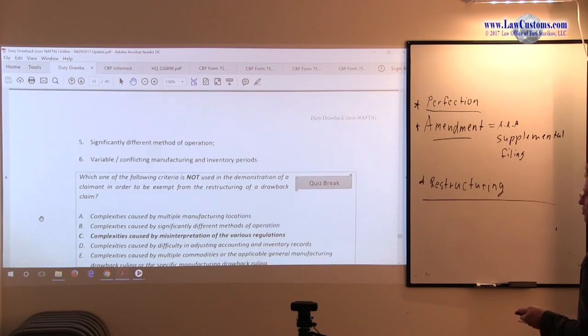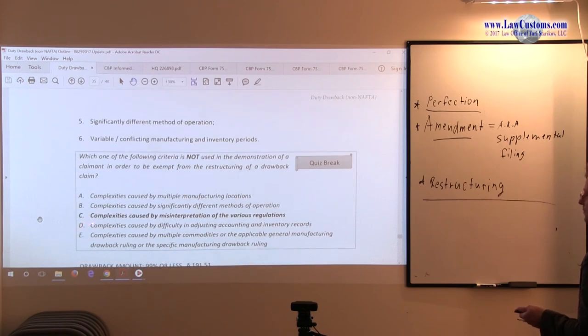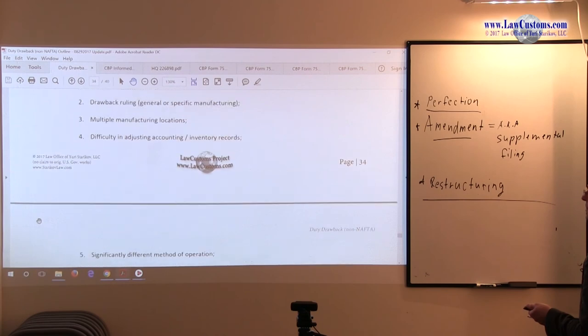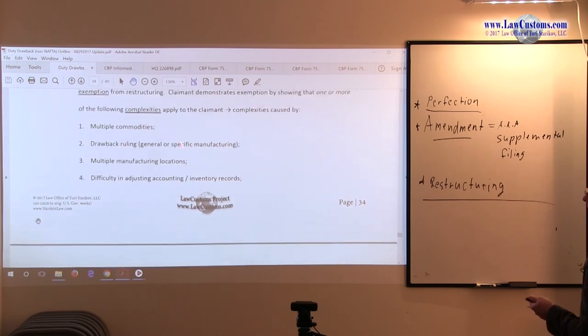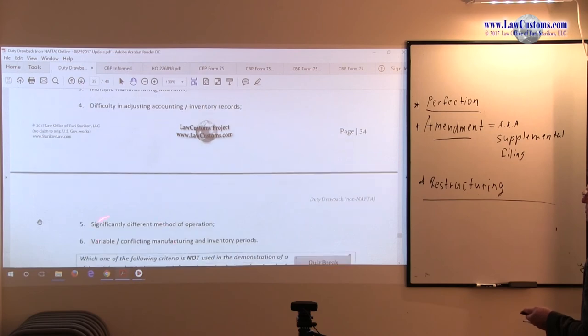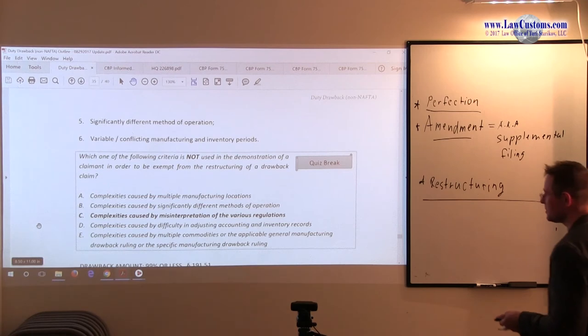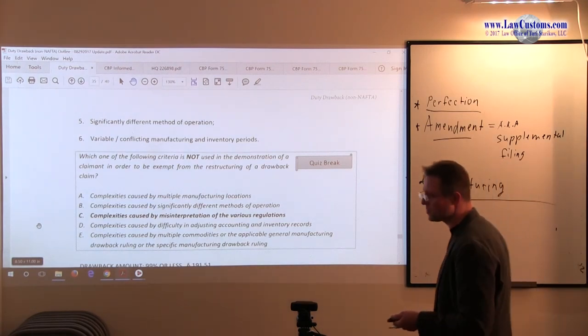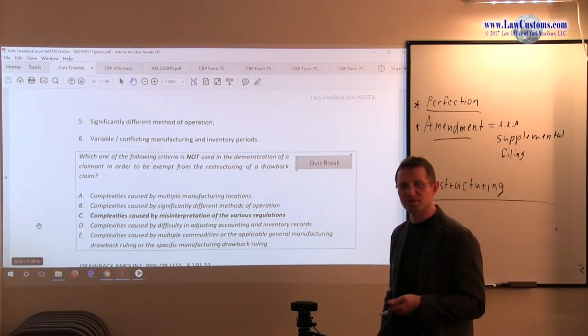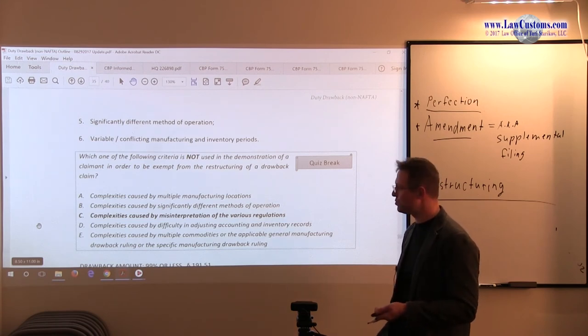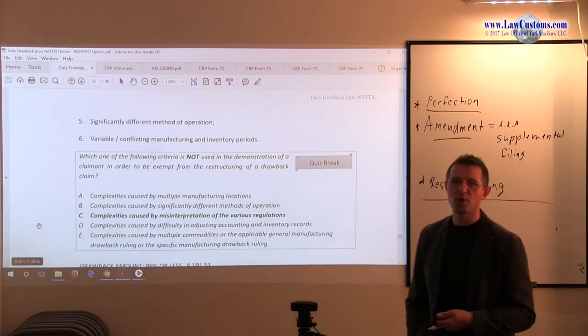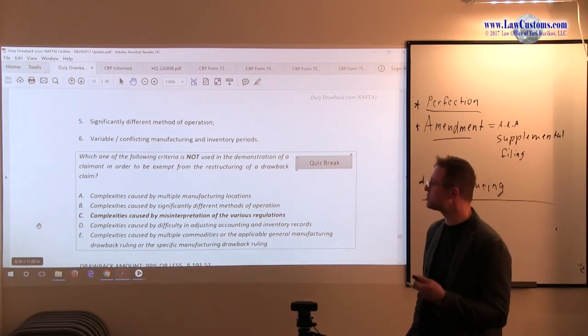Complexity is caused by significantly different methods of operation. Significantly different methods of operation is on the list, so B is good. C: complexity is caused by misinterpretation of various regulations. So if you cannot read various regulations, that's really your problem. Because regulations, even though they are complex, they may be complex, this may not be the reason because regulations are there to regulate you. If it's too difficult for you, hire an expert. All right. It's not on the operational side, it's on the interpretative side.